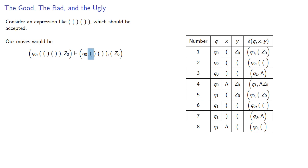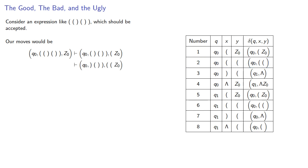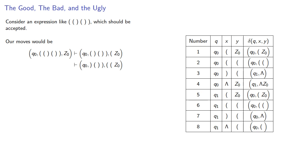Next, the first symbol of our string is open parenthesis, the top symbol of the stack is open parenthesis, and our delta transition says that we'll replace that open parenthesis with a double open parenthesis and stay in state q0. Next, our string symbol is closed parenthesis and our stack symbol is open parenthesis, so we replace it with the empty string and change to state q1.